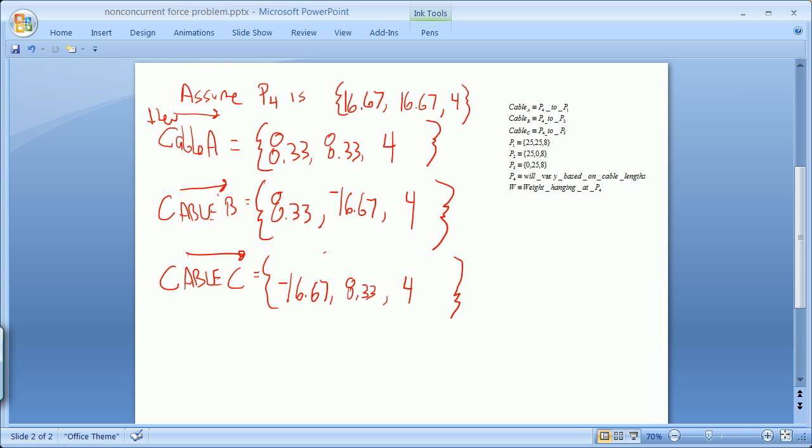Alright, so this is what the vector cable A will be. Of course, remember P4 is this, and if cable A is going to go from 16.67, 16.67 to 4, if we assume this is where our point 4 is at, this is what the vector, the complete vector, the linear vector that describes cable A, the linear vector that describes cable B, cable B going from 0.4 to 0.2.